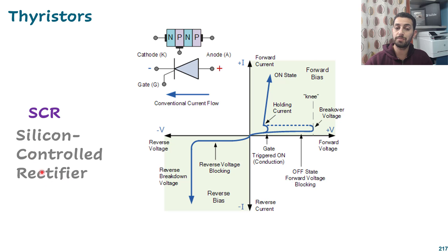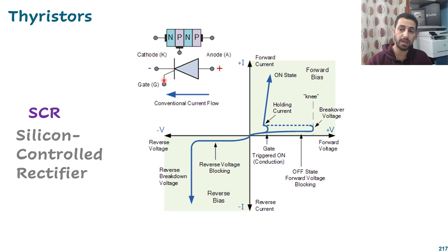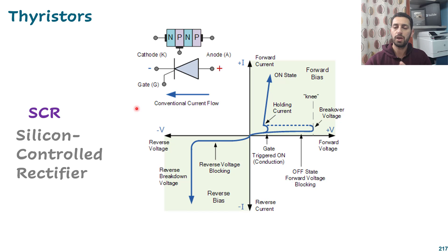Thyristors are diodes but controlled diodes. The symbol for a thyristor looks like a diode - exactly like a diode with anode and cathode - but it has a third terminal which is the gate. The gate is used to control if it's on or off, and we will see this now.